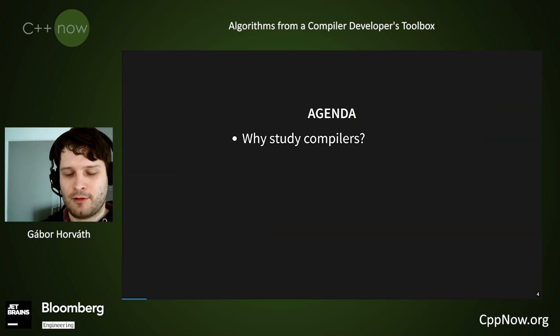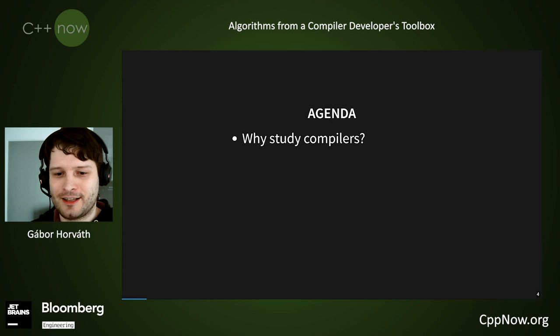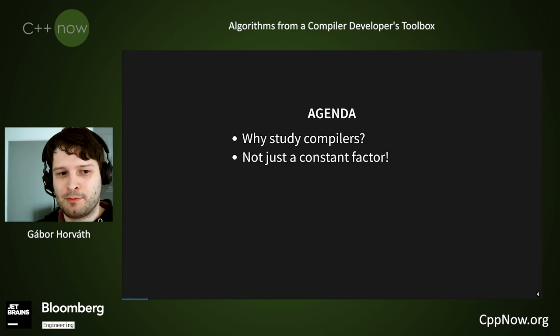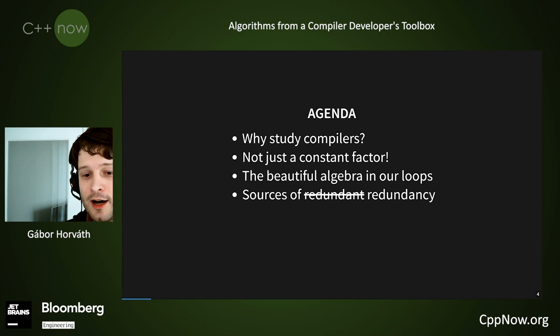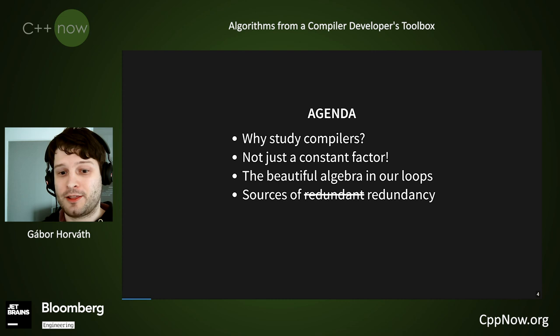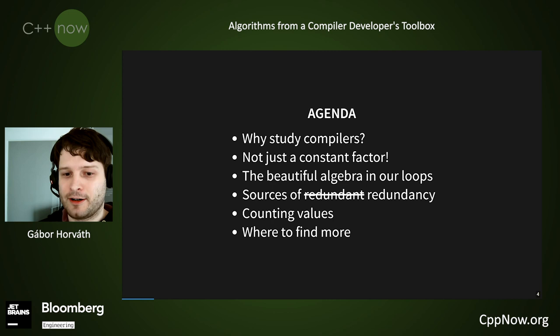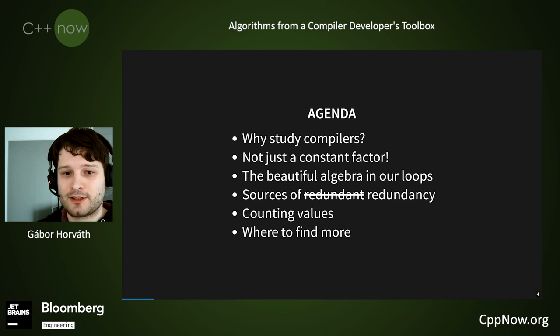Today, hopefully all of you are already interested in compilers because you are at this talk, but I will talk a bit about why this topic is interesting, at least according to me. I will try to bust some myths regarding the capabilities of compiler optimizations and show you some beautiful math that the compiler uses to reason about loops and how certain values evolve over time. I will also talk about redundancy, how it is introduced into programs and what the compiler does about it, including a smart way of counting values that can eliminate many sources of redundancy.